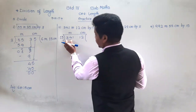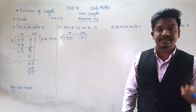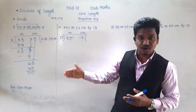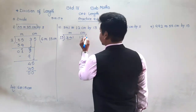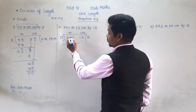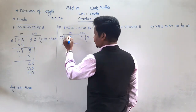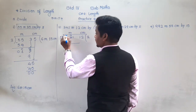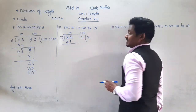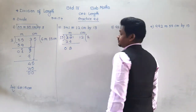Is 34 in the table of 13? 13 ones are 13, 13 twos are 26, 13 threes are 39 — so 34 is not there. The smaller number than 34 in the table of 13 is 26. Subtract 26 from 34: 4 minus 6 not possible, so take a borrow from 3 — 4 becomes 14, 3 remains 2. 14 minus 6 is 8, 2 minus 2 is 0.